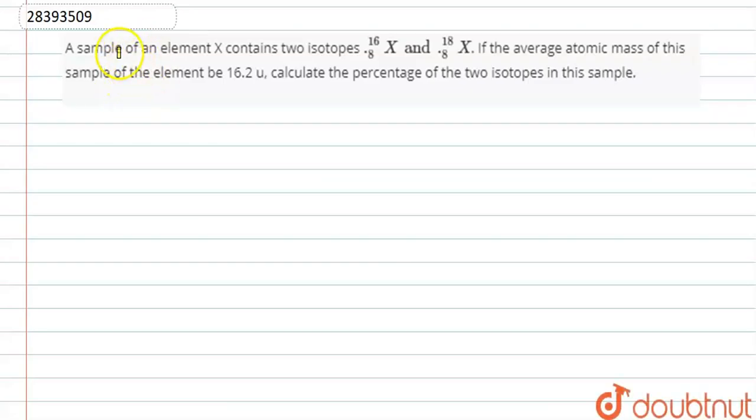So guys, the question is: a sample of an element contains two isotopes. One given is 16X and one given is 18X. Okay, so the average atomic mass of this sample given is 16.2u. Now we need to calculate the percentage of the two isotopes in the sample.